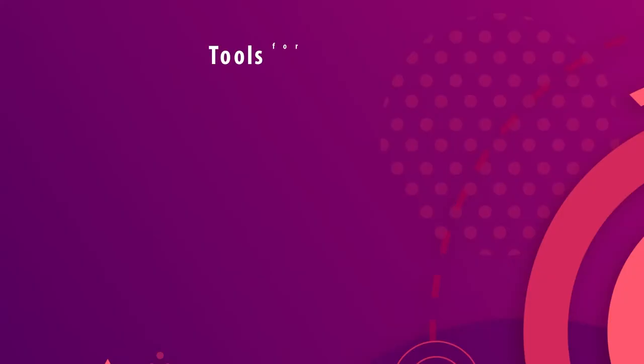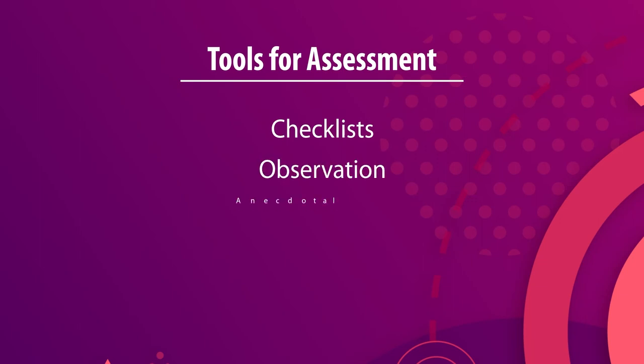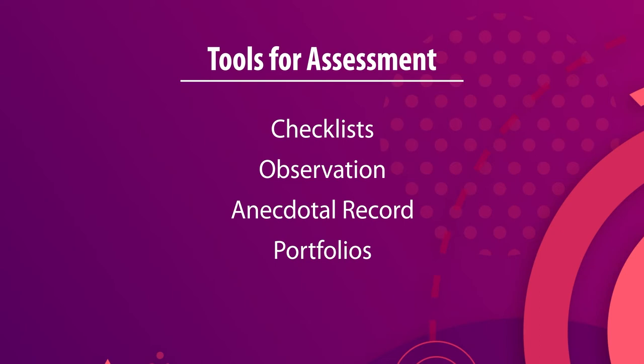When assessing co-scholastic dimensions, especially life skills, first identify which life skill you want to develop through a particular activity, content, or lesson. Then determine how you will assess it and frame the indicators. Then choose the tool. Common tools for co-scholastic assessment include checklists, observation schedules, anecdotal records, and portfolios — used by teachers in science classes and other subjects alike.